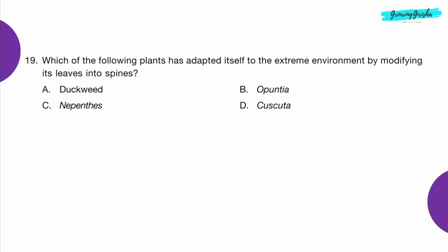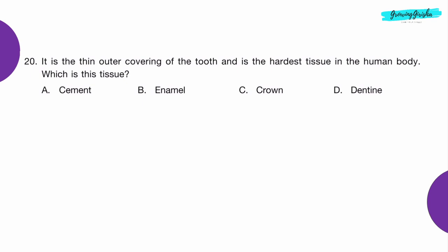Question 19: Which of the following plants has adapted itself to the extreme environment by modifying its leaves into spines? Option B: Cactus.